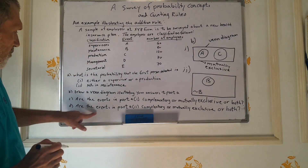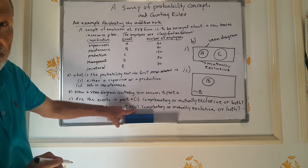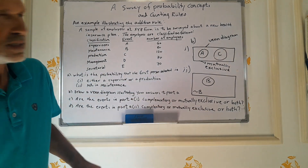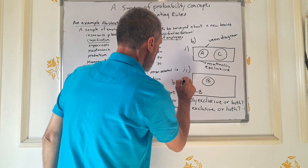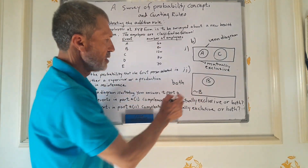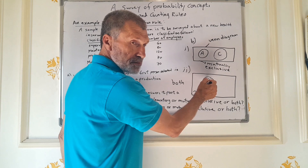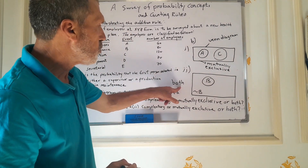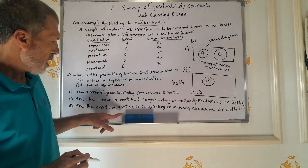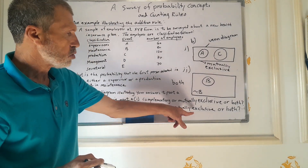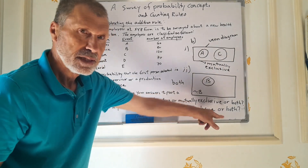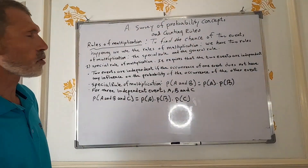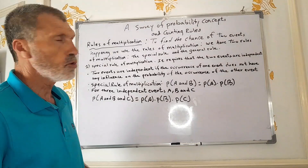Are the events in part A(ii) complementary or mutually exclusive, or both? They are both — they are mutually exclusive, and they are also complementary. Now we move to the rules of multiplication.